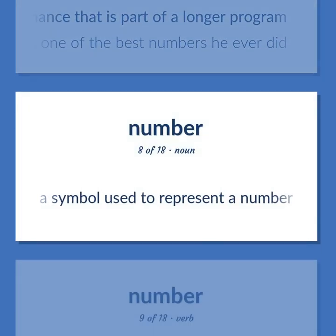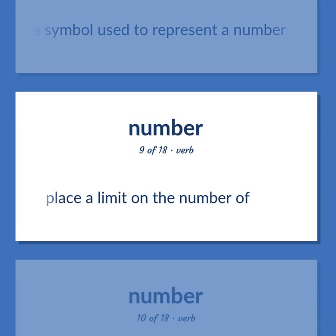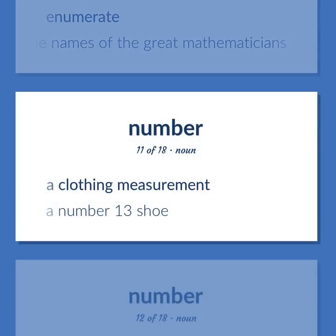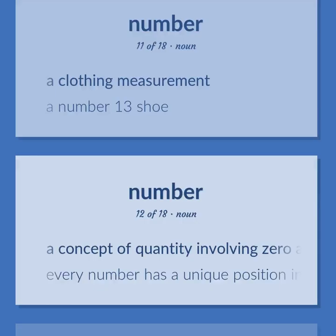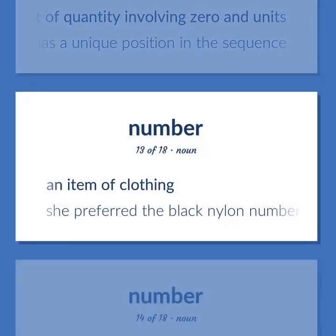A symbol used to represent a number. Place a limit on the number of. Enumerate — we must number the names of the great mathematicians. A clothing measurement — a number 13 shoe. A concept of quantity involving zero and units. Every number has a unique position in the sequence. An item of clothing. She preferred the black nylon number.